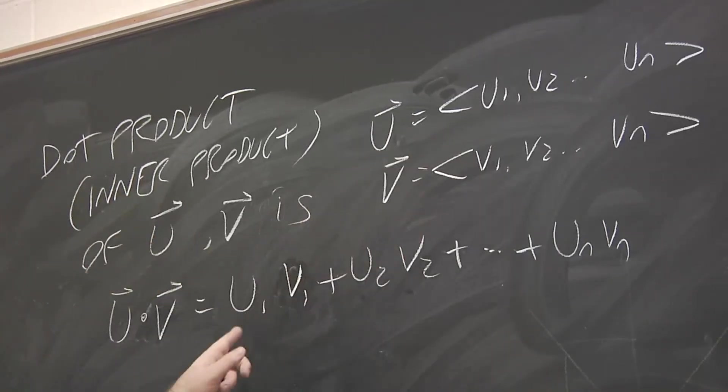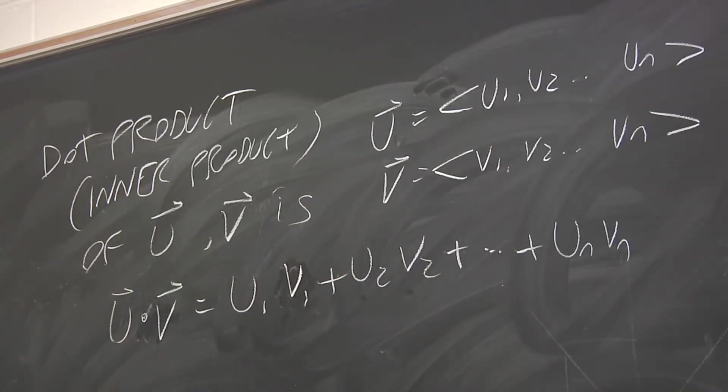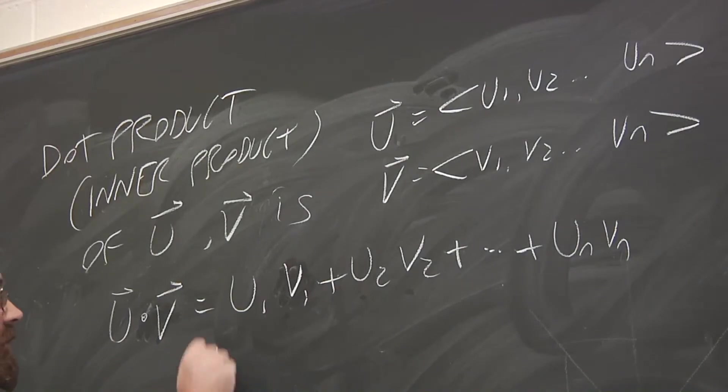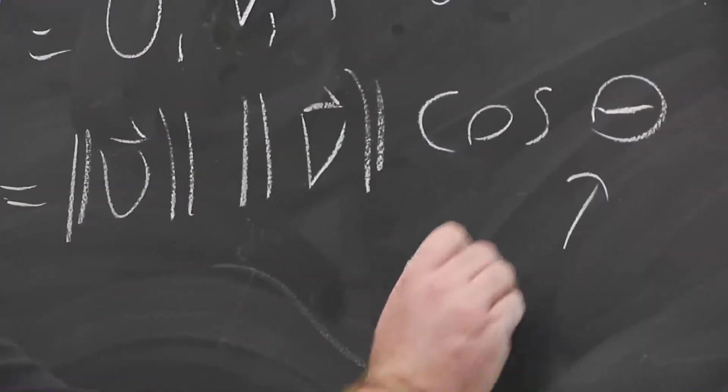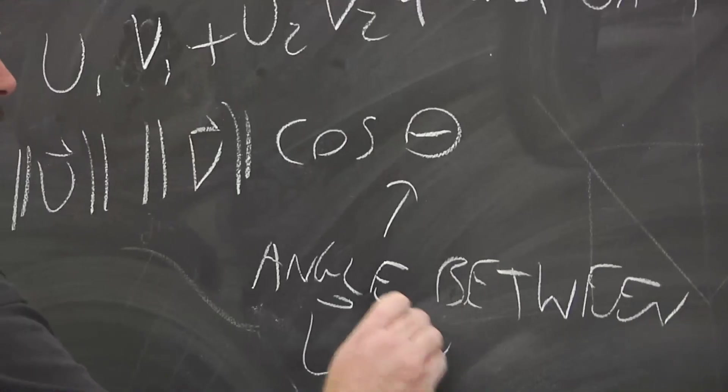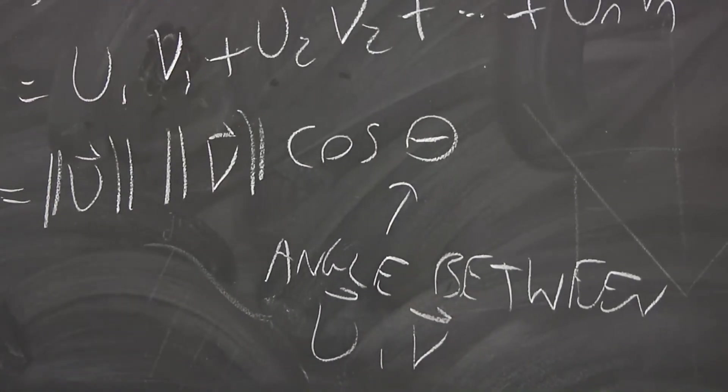Another definition which you would see in a physics class, most likely, is the magnitude of u, the magnitude of v, times the cosine of the angle between them. Which is one of the main applications of a dot product is to compute the angle between vectors.